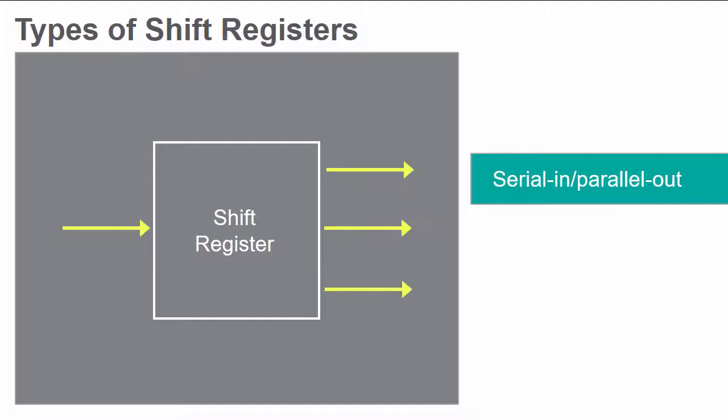Serial-in, parallel-out shift registers load serial data into the register one bit at a time and output all the data bits in one grouping parallel to each other simultaneously.